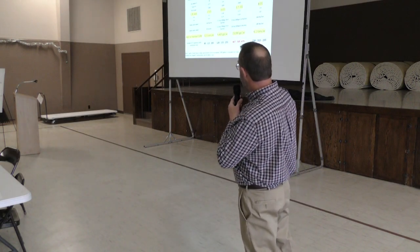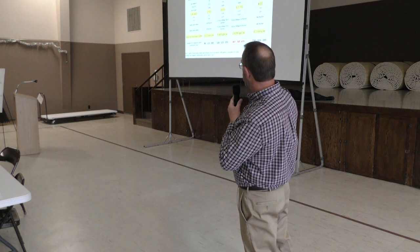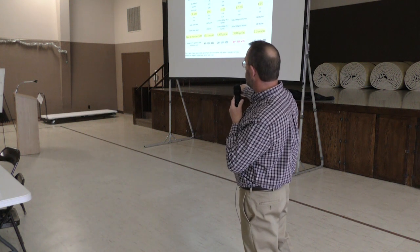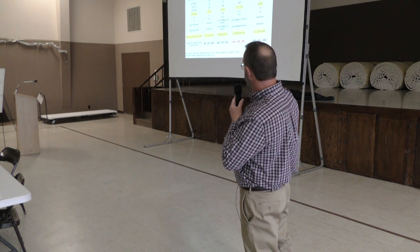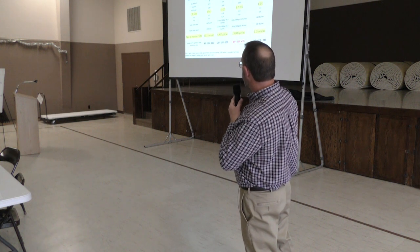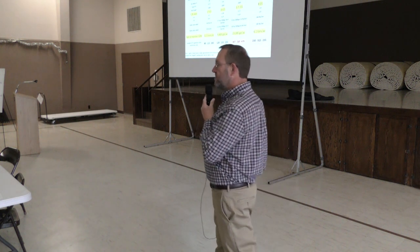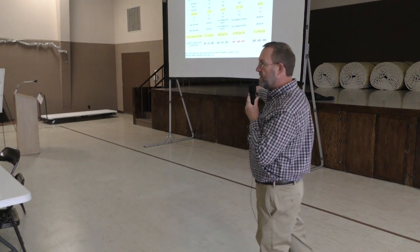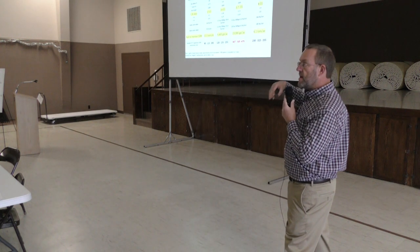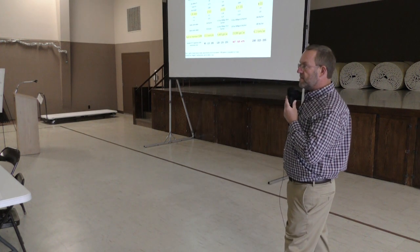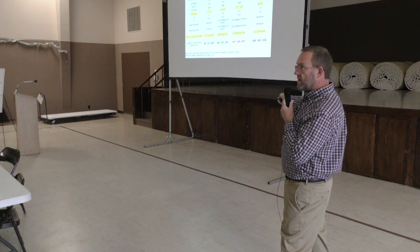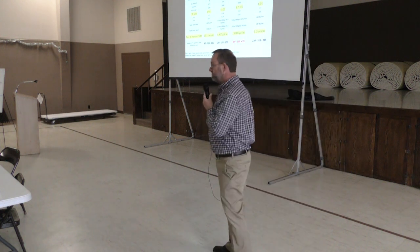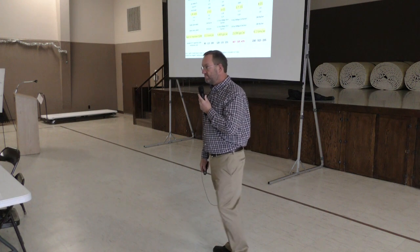The take-home message is that by looking at those ratios, if you're strictly trying to build organic matter with low-ratio manure like liquid hog, it really isn't possible to do that strictly with just this type of manure. You'd have to incorporate cover crops or some other carbon into the system to balance it out in order to do that.